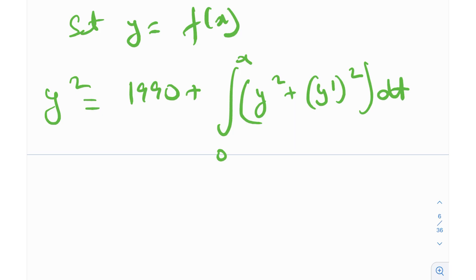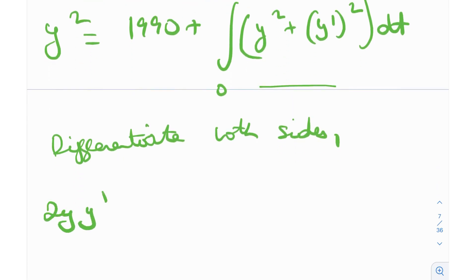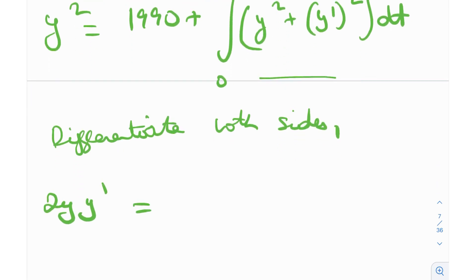Now if I just differentiate both sides, I'll have to use the fundamental theorem of calculus to differentiate. On the left-hand side I'll get 2y·y' because of the chain rule, and the derivative of 1990 will be 0, and then using the fundamental theorem of calculus I'll get y² + (y')².